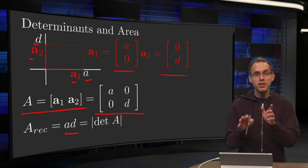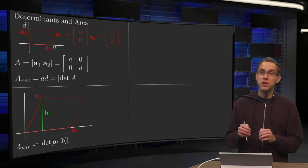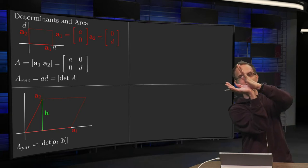What happens if we do it a bit more general? If you have some parallelogram with two vectors a₁ and a₂, you can form a parallelogram. You can always put it like this such that a₁ is aligned along the x-axis.